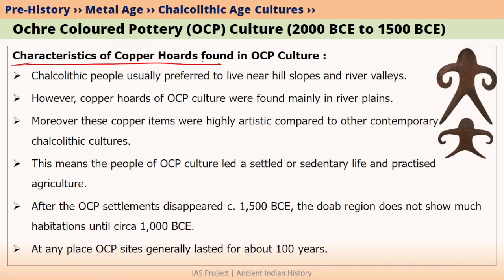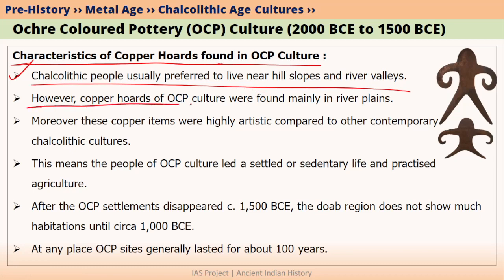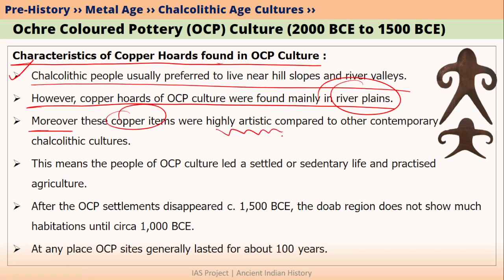Let us talk about the characteristics of these copper hoards found in OCP culture sites. Chalcolithic people usually prefer to live in hill slopes and river valleys. However, these copper hoards of OCP culture were found in river plains — that is, in the fertile plains of Ganga and Yamuna rivers. Moreover, these copper items were very artistic in nature compared to those prepared by other Chalcolithic cultures like Malwa culture, Ahar-Banas culture, or Ganeshwar Jodhpura culture.